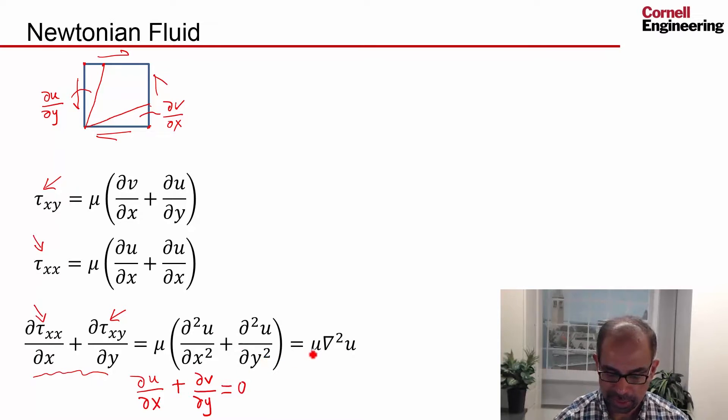And then you can write this as mu del squared u, where del squared is the Laplacian operator. So you get this nice compact form, but that's only valid if you have a Newtonian fluid, and you have incompressible flow, so that you can use this identity.